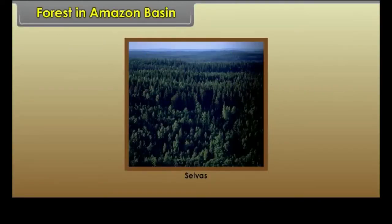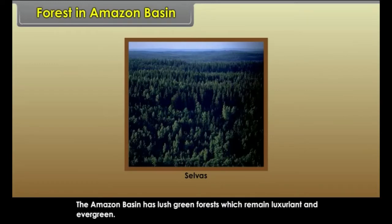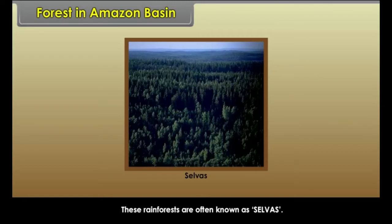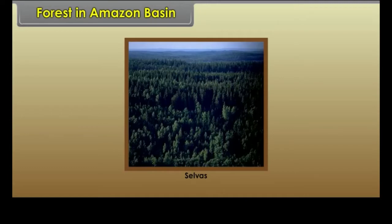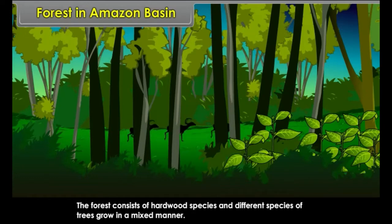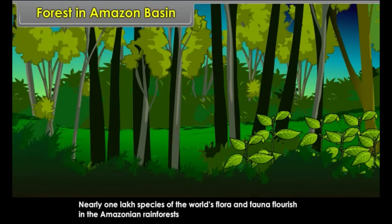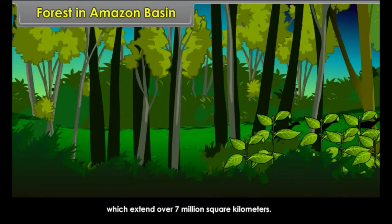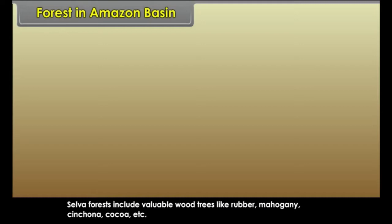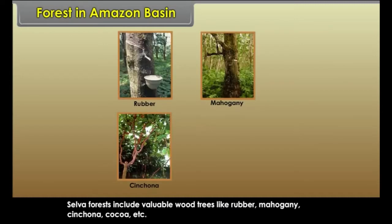The Amazon Basin has lush green forests which remain luxuriant and evergreen. These rainforests are often known as selvas. The forests are very thick and trees are very tall. The branches of trees intermingle and make a canopy. The forest consists of hardwood species and different species of trees grow in a mixed manner. Nearly 1 lakh species of the world's flora and fauna flourish in the Amazonian rainforests, which extend over 7 million square kilometers. Selva forests include valuable wood trees like rubber, mahogany, cinchona, cocoa, etc.